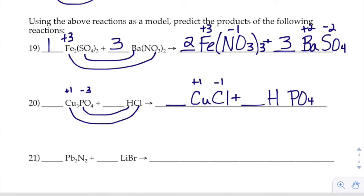Now, hydrogen with phosphate. Hydrogen's plus 1. Phosphate's minus 3. So, it's H3PO4. And then we just have to balance, right? Fix our H's and our Cl's. Just like that.